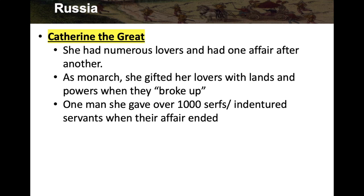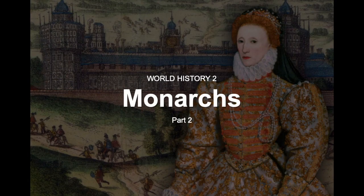Catherine the Great had numerous lovers and one affair after another. As a monarch, she gifted her lovers with lands and powers when they broke up. When she got tired of a lover, to have them go away quietly was important so she could move on. She would give extravagant gifts — one man she gave over 1,000 serfs, which were indentured servants, when the affair ended. These were human beings treated as property. That was Catherine the Great, and that is it for Monarchs Part Two.